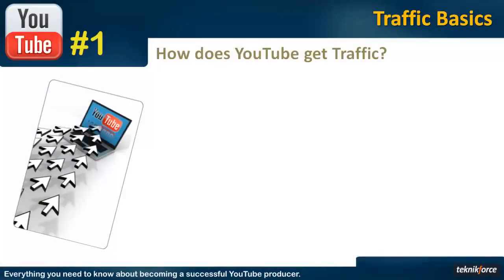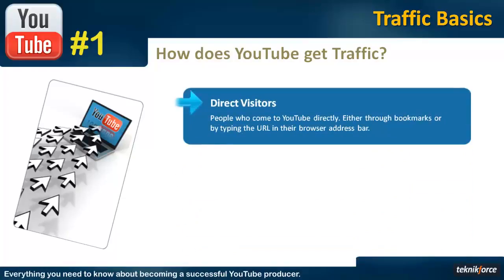Before we talk about how you can get traffic from YouTube, let's understand how YouTube gets its own traffic. The basic source is direct traffic. These are visitors who have come to YouTube through bookmarks, or they've set YouTube as their homepage, or they might be typing YouTube's URL in their address bars. This is incidentally the kind of traffic that Google and Facebook get.